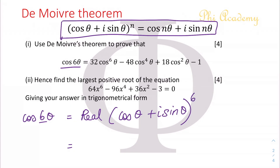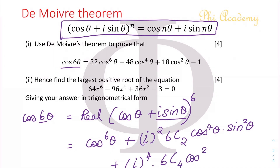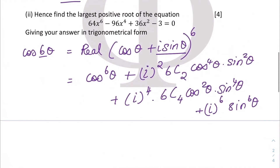To expand this you can use the binomial expansion method. So we have cos⁶θ plus the even powers of i terms only. So we have i² · 6C2 · cos⁴θ · sin²θ, and then we have plus i⁴ · 6C4 · cos²θ · sin⁴θ, then i⁶ · sin⁶θ.